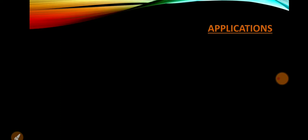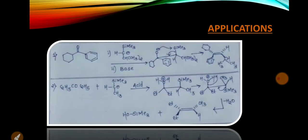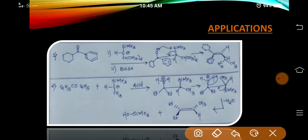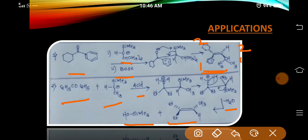Applications of Peterson olefination: First, the reaction of a ketone with an alpha-silyl carbanion in basic medium involves syn elimination and gives the cis product. Second, the reaction of diethyl ketone with an alpha-silyl carbanion in the presence of acid undergoes anti elimination of silyl alcohol and water and gives the trans product.